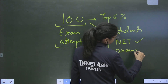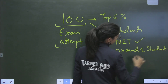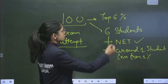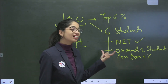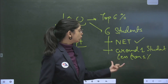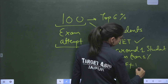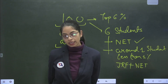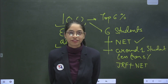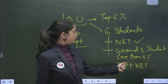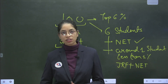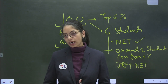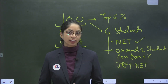Less than 1% qualify for JRF. 6% clear NET. Among these, the cream students — a very small number — basically have JRF as well as NET. The cut-off, JRF positions and seats will vary. So, my last advice: if your age is less than 30, always fill the form for NET plus JRF as well. Thank you.